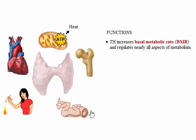Thyroid hormone is the most important factor controlling basal metabolic rate. It increases BMR, increasing oxygen consumption and heat production. Thyroid hormone is the main regulator of metabolism.